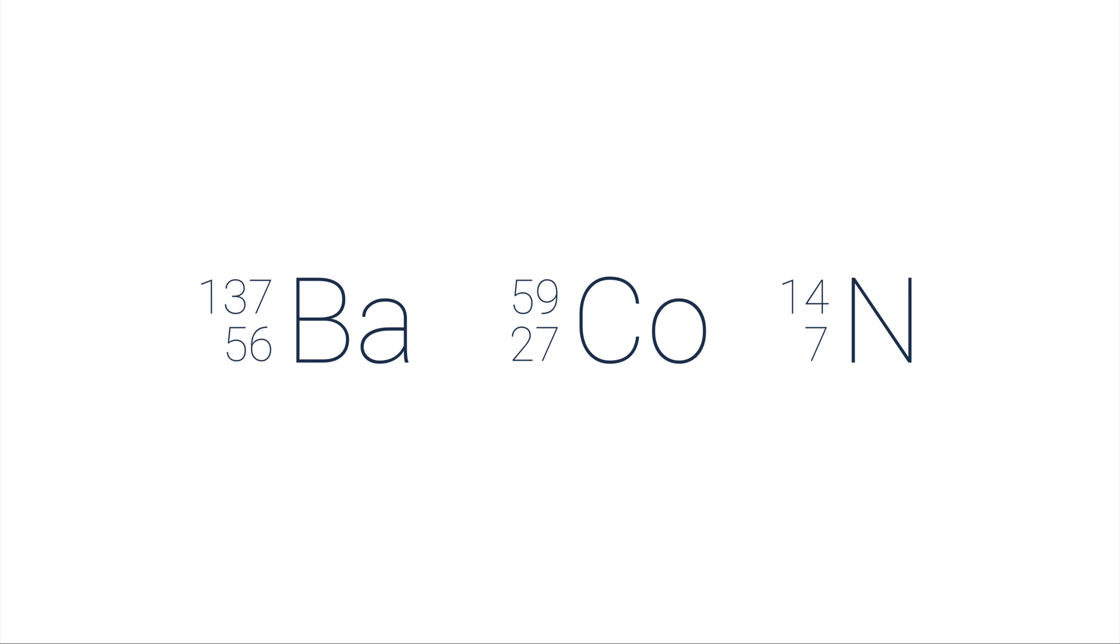Cobalt-59, again the atomic number for cobalt is 27, that's in the lower left corner, but in the upper left corner is the mass number, protons and neutrons together, 59. And then for nitrogen, just as another example, we have nitrogen-14.